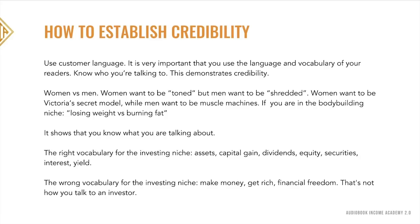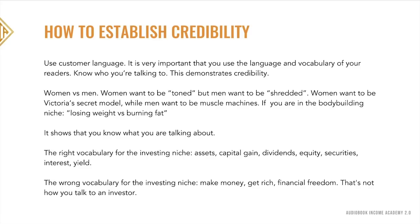Another example: in the investing niche the right vocabulary would be terms like assets, capital gains, dividends, equity, securities, interest, and yield. The wrong vocabulary would be 'make money,' 'get rich,' or 'financial freedom' — that's not how you talk to an investor. Another way of establishing credibility is providing a quote from an authority figure. The quote itself isn't always the most important part — it's who said it. For example, quoting the founding director of Yale University's Prevention Research center establishes that you know what you're talking about.